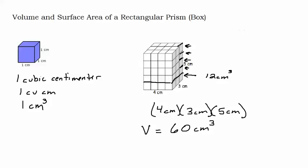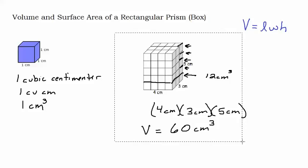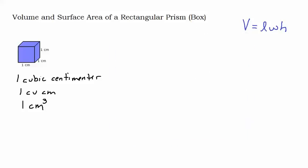The volume of a box is simply the length times the width — which gives you how many you need for the bottom level — multiplied by the height. You can memorize that formula; it's pretty easy. Think of length times width as how many cubes you need for the bottom, and height as how many layers you need to stack. I'm sticking with centimeters here, but as long as the labels are the same you can find the volume. If the labels were different — say centimeters and meters — you'd need to convert them all to the same unit before calculating.